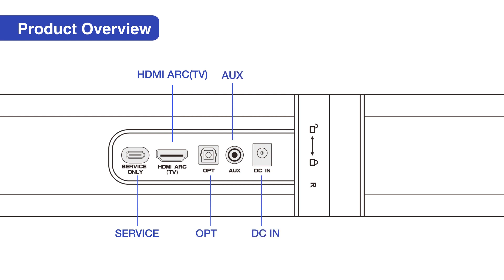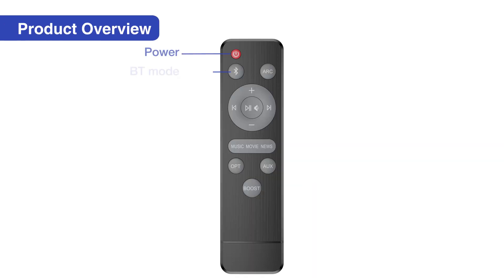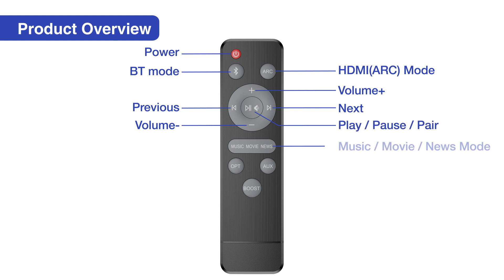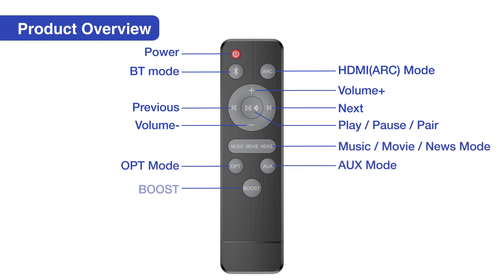The KY2020D supports multiple audio formats. The soundbar remote allows you to switch between connection modes, play or pause, and skip to the next or previous songs. If the volume is too low after connection, use the boost button to increase volume.